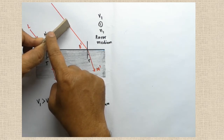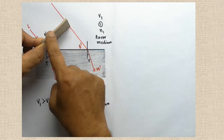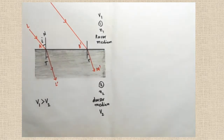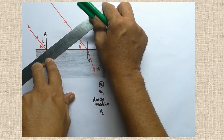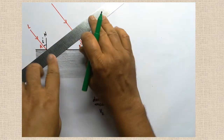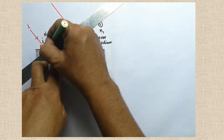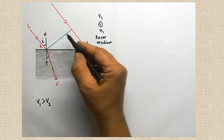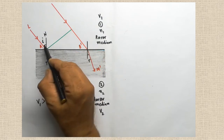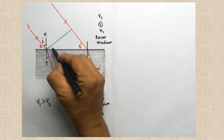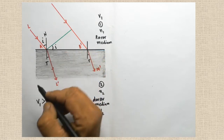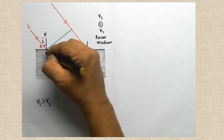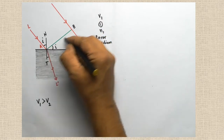Here I have shown the three-dimensional model of the wavefront. Now I am going to draw a perpendicular green color line to show the wavefront. This green line shows the wavefront for the incident rays and is called the incident wavefront. This wavefront can be named AB — AB is called the incident wavefront.